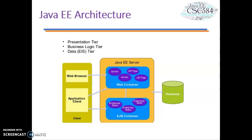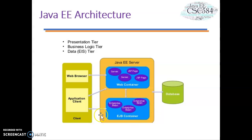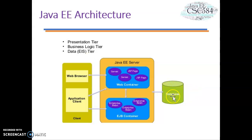This figure shows the various elements that can make up the client tier. The client will communicate with the business tier in the Java EE server, whether directly or, in the case of a client running in a browser, by going through JSP, servlet, and also running in the web container, or EJB. It will also directly connect to the database tier, which is the data tier.